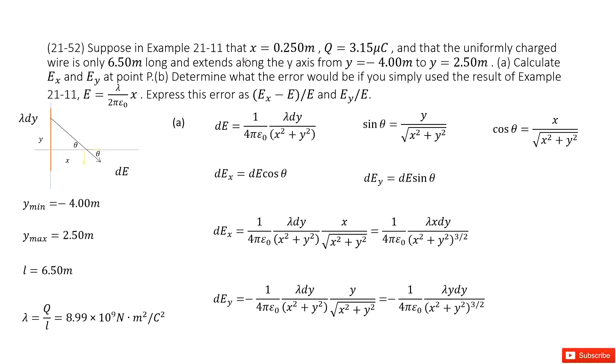The first part asks you to calculate Ex and Ey at position P. We consider a small fraction on the wire called dy. How much charge does it carry? Lambda times dy - lambda is the charge density times the fraction length dy.